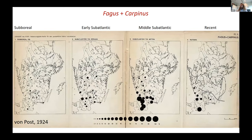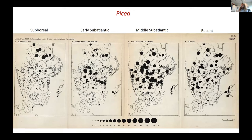Very interesting is his application of these findings to fossil sites. Published in 1924, just a few years after his percentage pollen diagrams and his 1916 lecture, we see four time periods — the recent one being the last — and the distribution of Fagus and Carpinus. And here we see maps for Picea. The patterns visible there are pretty much the same as in modern analyses of this type, though notably our modern analyses often use fewer data points than what von Post had here.